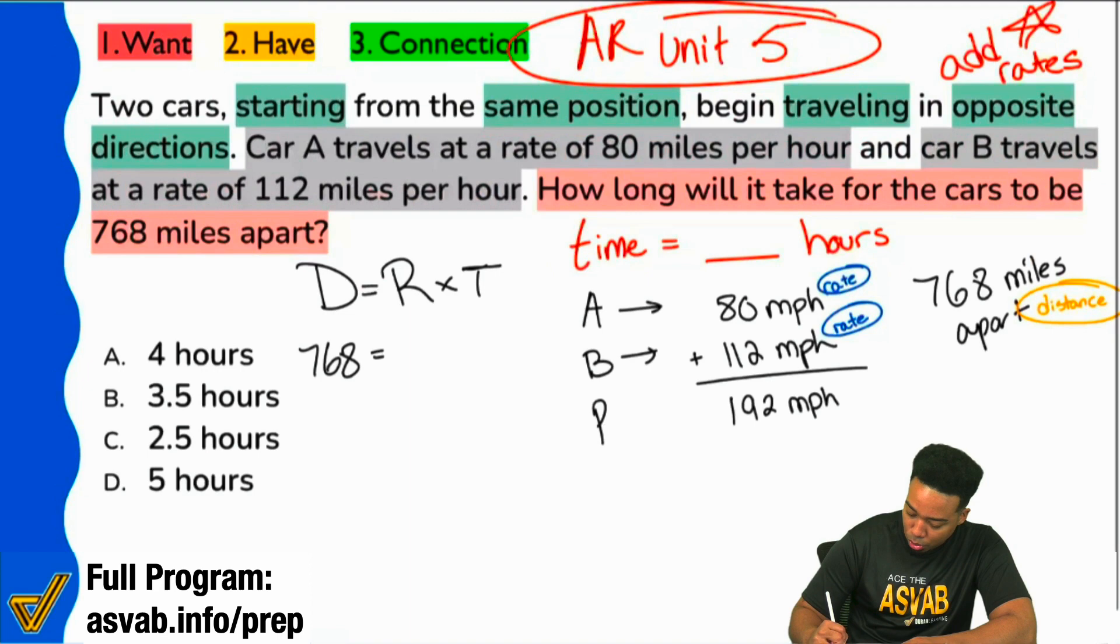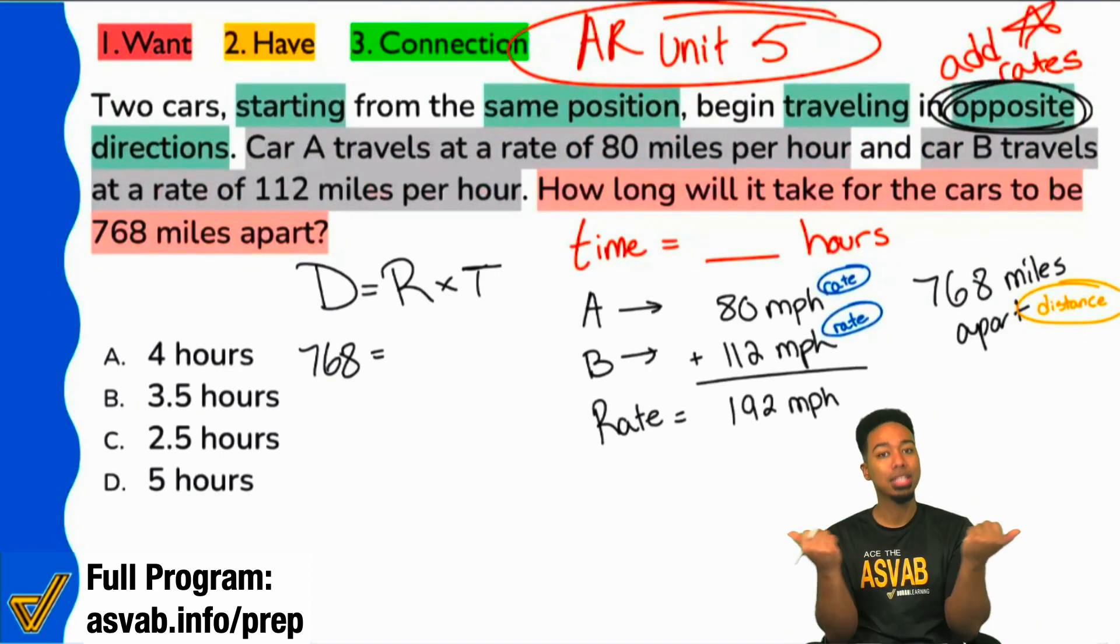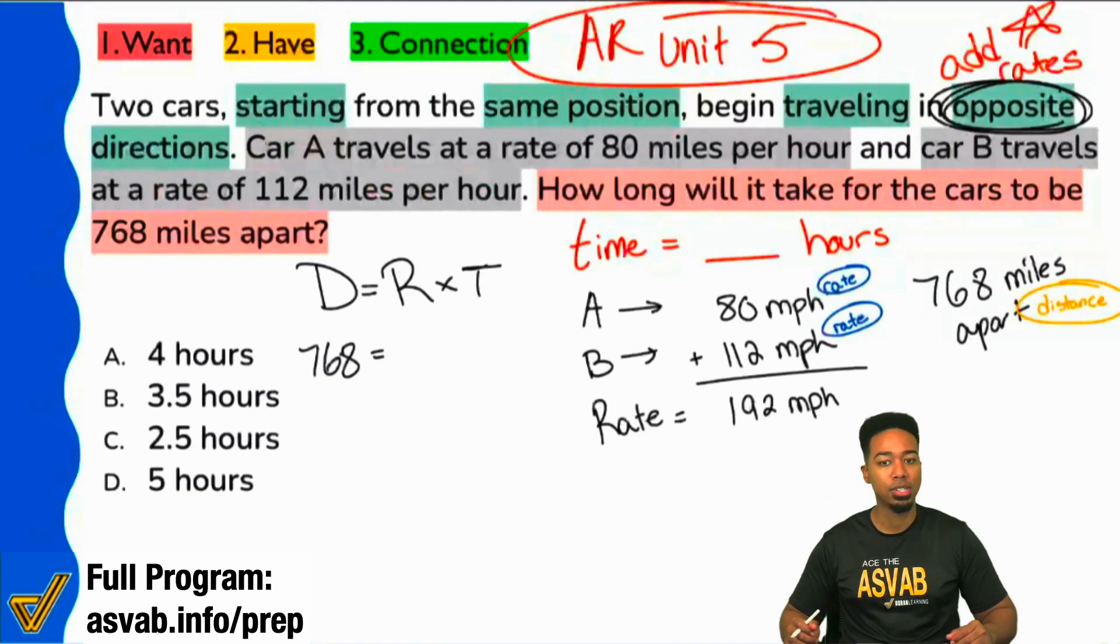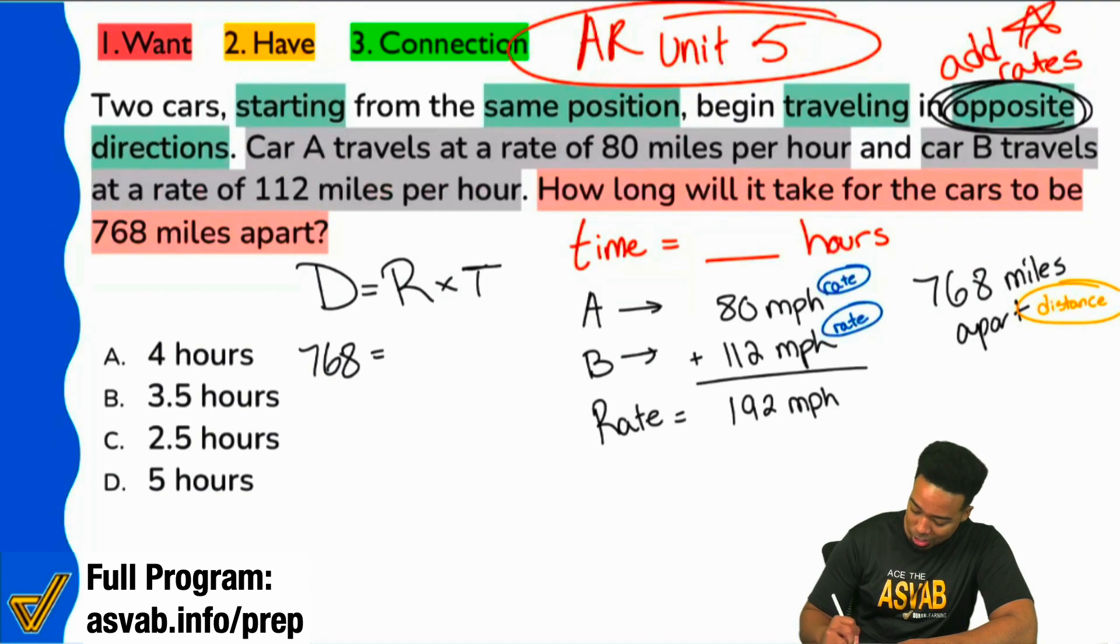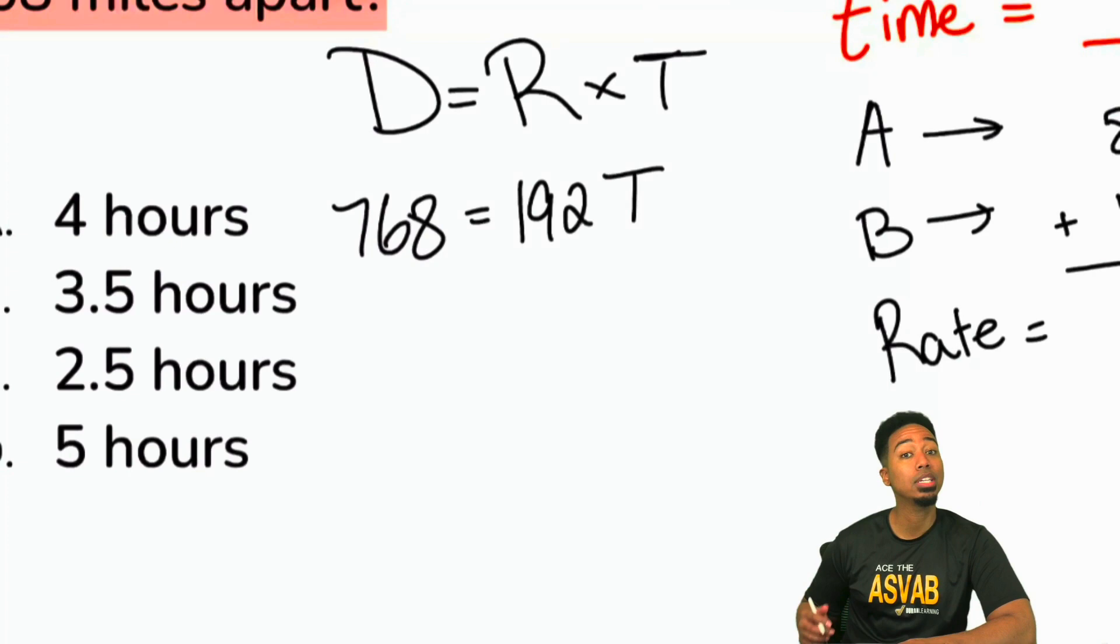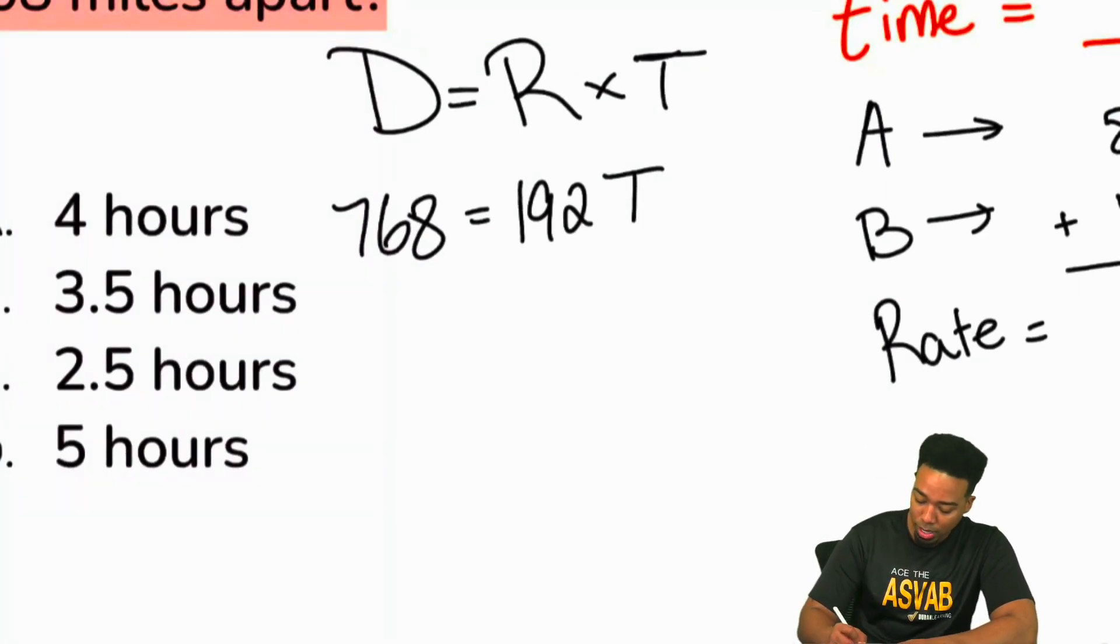That is the true combined rate, because again, opposite directions. That's what's going to tell us that their combined distance is the sum of their distances. So there we go, 192 miles per hour multiplied by time. And so lastly, what we need to do is go ahead and divide both sides by 192.